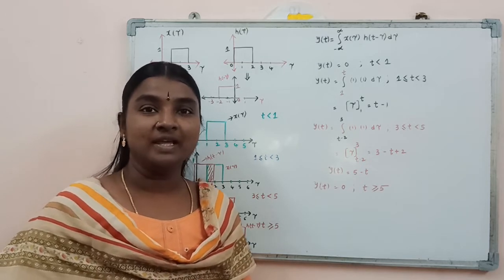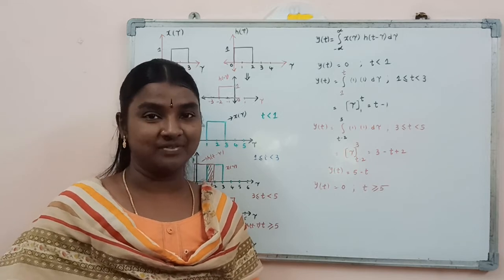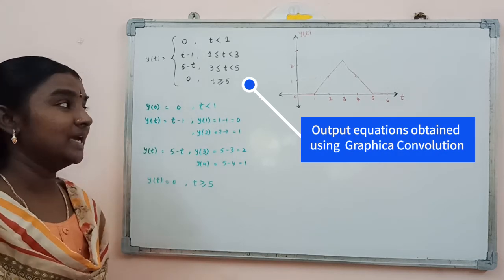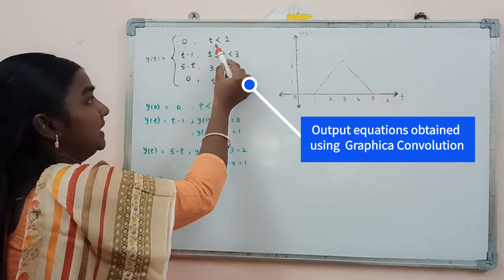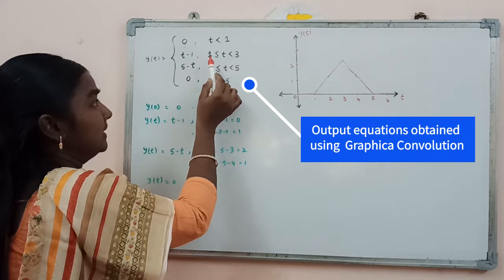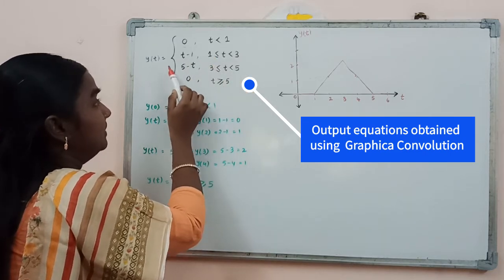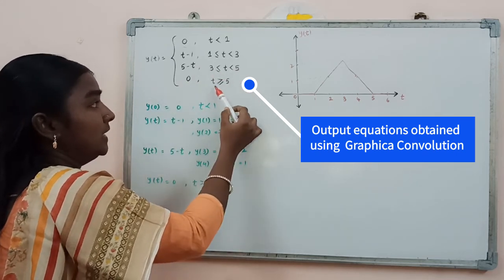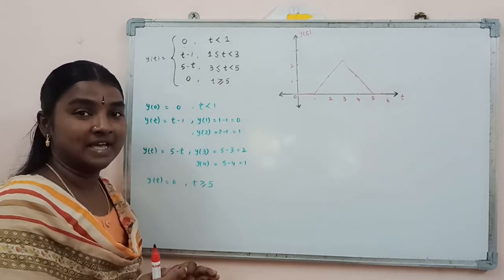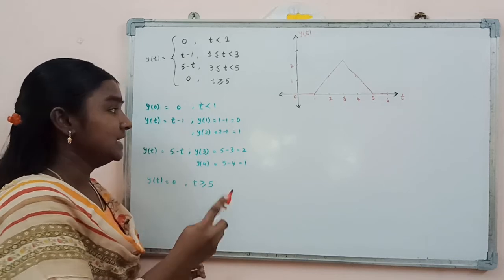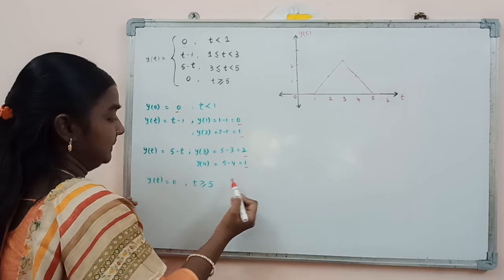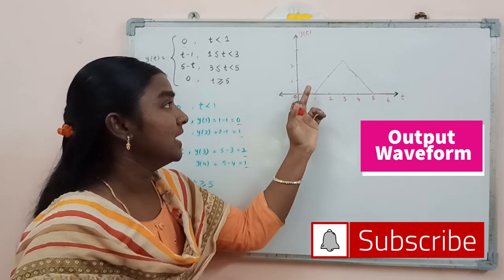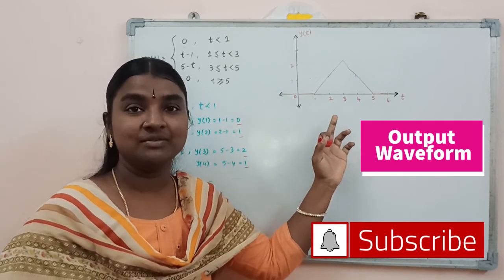In this manner, we can solve any question based on graphical convolution. The output equations for this question are: y(t) = 0 for t < 1; y(t) = t - 1 for 1 ≤ t < 3; y(t) = 5 - t for 3 ≤ t < 5; and y(t) = 0 for t ≥ 5. By considering different time instances, we compute the amplitudes and draw the final output waveform.